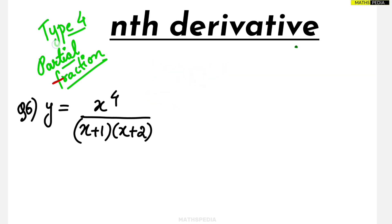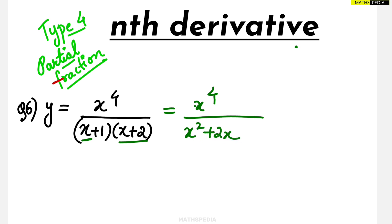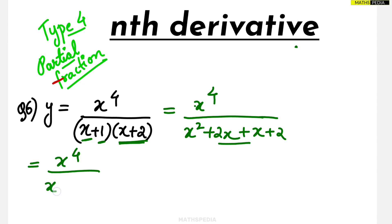If it is a proper fraction, you can directly go for partial fractions. But if it is improper, you have to divide the two. So let us simplify this first. It will be equal to x power 4 divided by — expand this: x multiplied gives x squared plus 2x, and 1 multiplied gives x plus 2. So the simplified version will be x power 4 divided by x squared plus 3x plus 2.